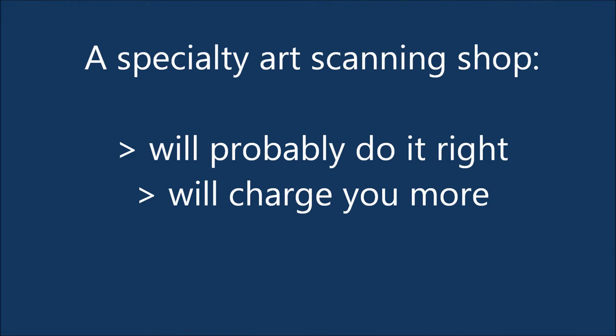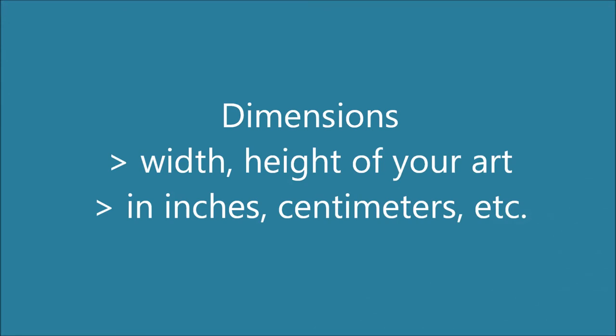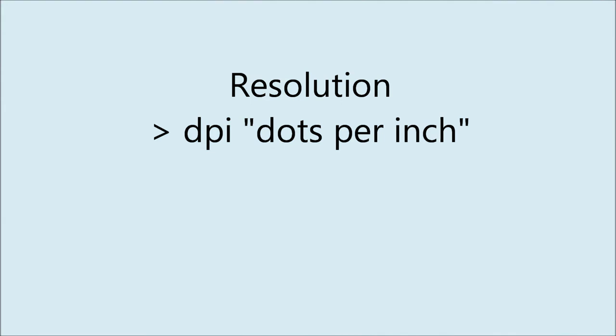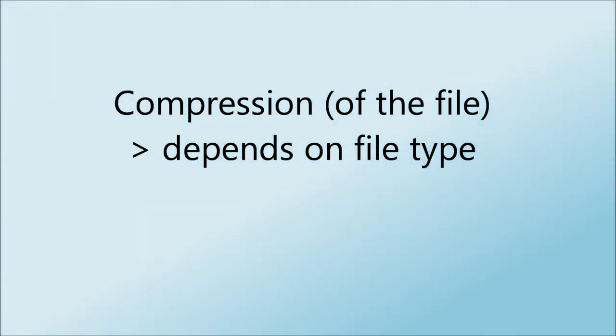If you go to a specialty art scanning shop instead and just tell them what you're doing with the art, they will probably do it right, though you will pay more. If you're familiar with image files, you'll know that they have elements such as dimension in inches or centimeters, resolution — which is usually called DPI — color space, which may be CMYK, RGB, bitmap, or grayscale, and compression, depending on file type.